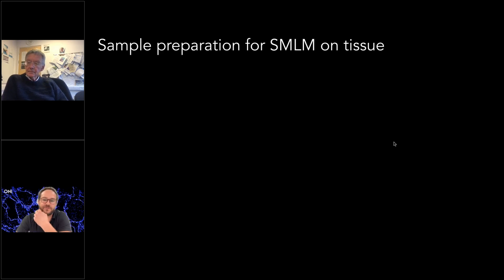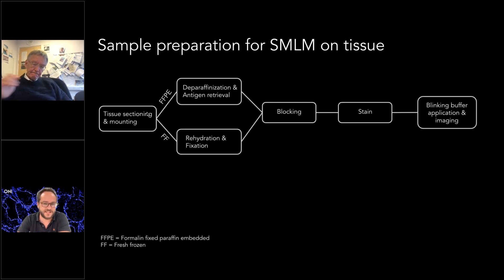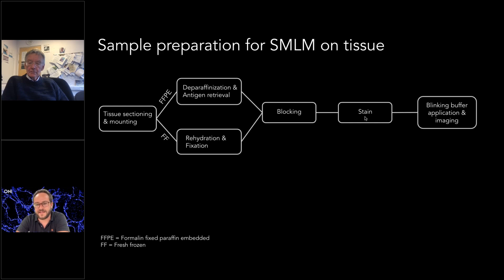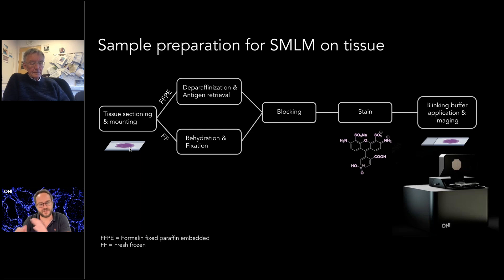The sample preparation for SMLM looks quite similar to a regular immunohistochemistry or immunofluorescence protocol. You will see familiar steps: sectioning and mounting the tissue, then for FFPE tissues, de-paraffinization and antigen retrieval, or for fresh frozen, brief rehydration and fixation. These are sample-dependent deviations from your regular immunostaining protocol, followed by blocking, staining, and mounting the sections for imaging.